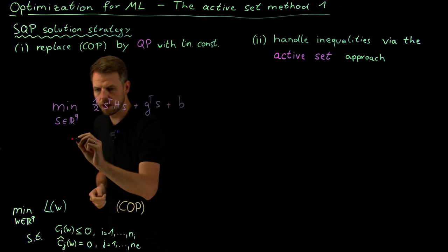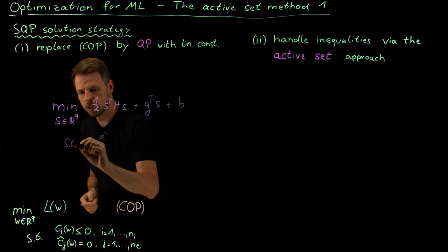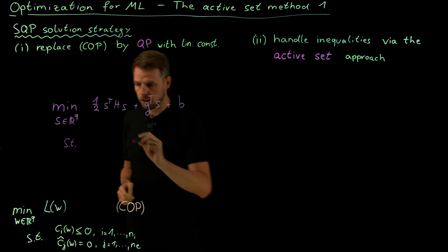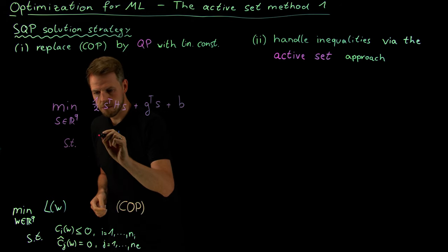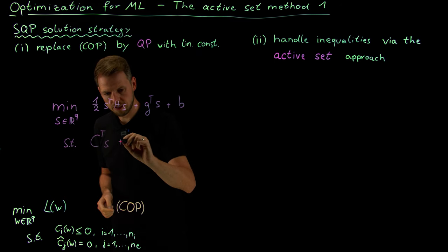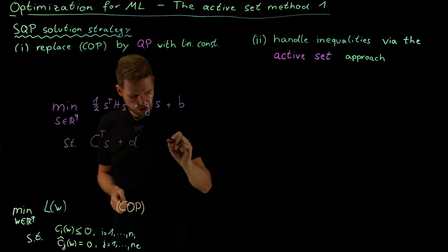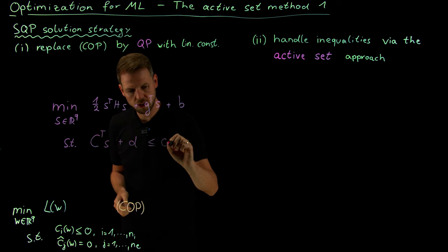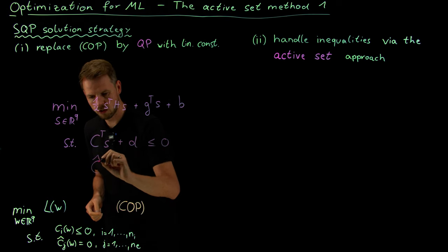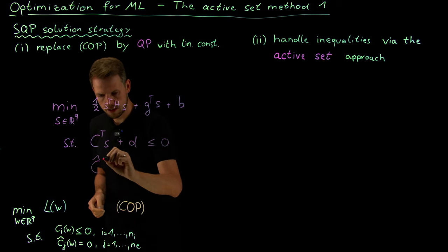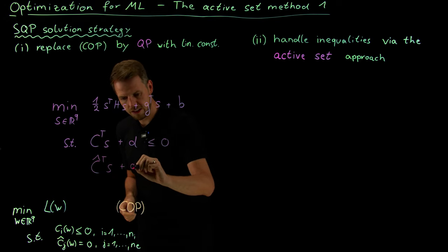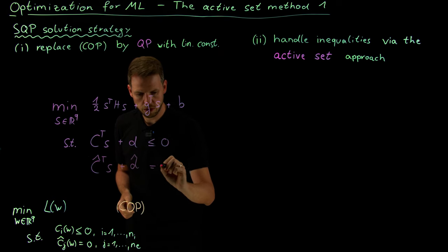And then we have the constraints, which are also of a specific form. This is a quadratic program with linear constraints. What we use here is a matrix C times S plus some vector D, which has to be less than or equal to zero for the inequality constraints, and a matrix C-hat times S plus D-hat, which has to be equal to zero for the equality constraints.